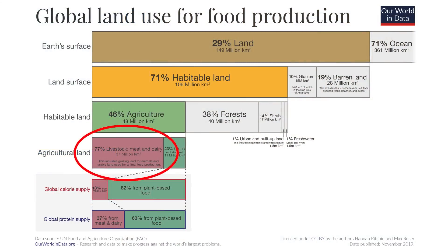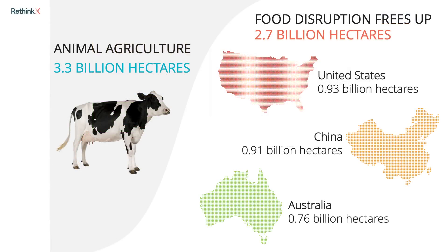Number two: animal agriculture uses a third of all habitable land on the planet. Precision fermentation, cellular agriculture, and other new food technologies that disrupt animal products will therefore free up about 80% of all that land currently devoted to livestock. That's 2.7 billion hectares — an area the size of the United States, China, and Australia combined. So the opportunities for reforestation, conservation, and rewilding are totally unprecedented. And it's not just land animals — seafood will be disrupted as well. Beyond climate change, the food disruption will be by far the best thing that has ever happened for reducing humanity's ecological footprint.